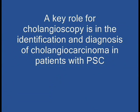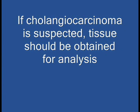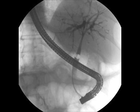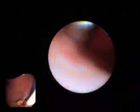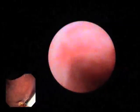A key role for cholangioscopy is in the identification and diagnosis of cholangiocarcinoma in patients with PSC. If cholangiocarcinoma is suspected, tissue should be obtained for analysis by cytology, FISH, biopsies, or a combination thereof. This patient has a common hepatic duct stricture and intrahepatic ductal dilation. On cholangioscopy, a smooth but bulky area of tissue is seen at the level of the stricture with significant narrowing of the duct lumen. This is highly concerning for cholangiocarcinoma on appearance. Multiple forceps biopsies were taken from this patient using the cholangioscopic biopsy forceps. The patient was found to have cholangiocarcinoma.